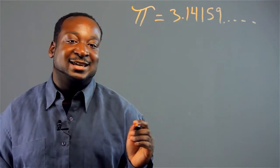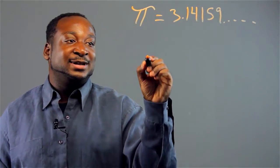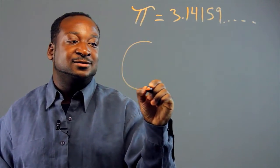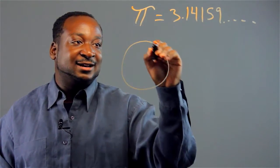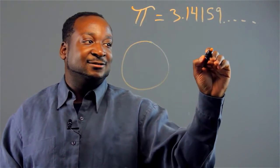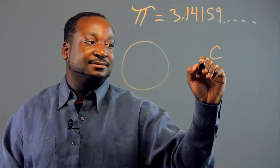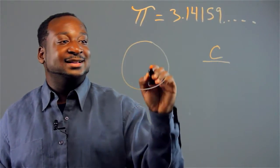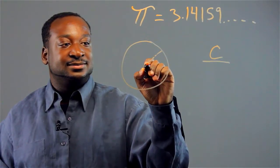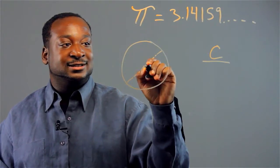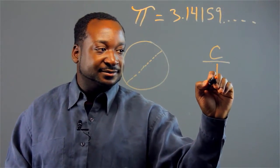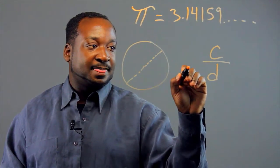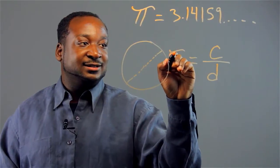So what pi is, it's a ratio between the circumference of a circle, this area outside of the circle, we'll call that C, and the diameter, a chord from one end of the circle to the other that passes through the center. This is the equivalent to pi.